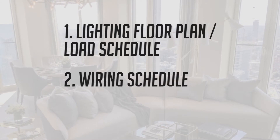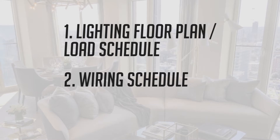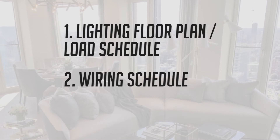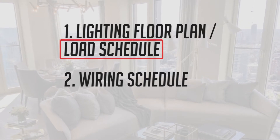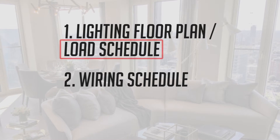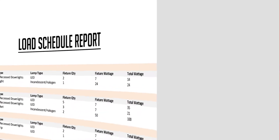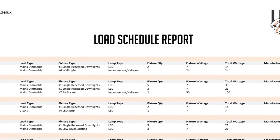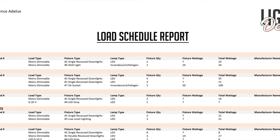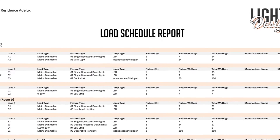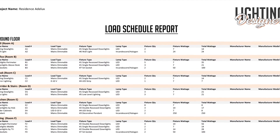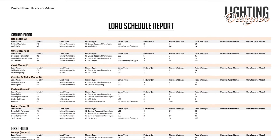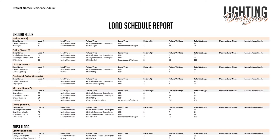We've already talked about the lighting floor plan in our previous tutorial — you can check the link below if you want to see that first. But today we will focus on how to use a load schedule. A load schedule is a document that is in general provided by the lighting designer, and that document should clearly list all the information related to the lighting circuits used on your project. Here, in our example, we can see that the lighting circuits are listed and organized by room.